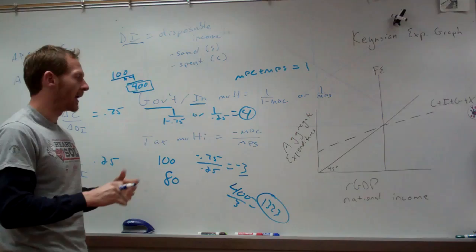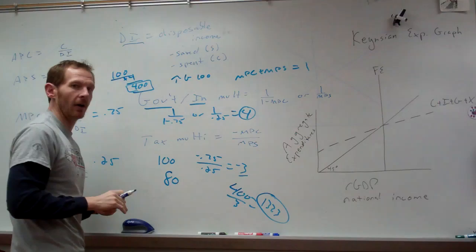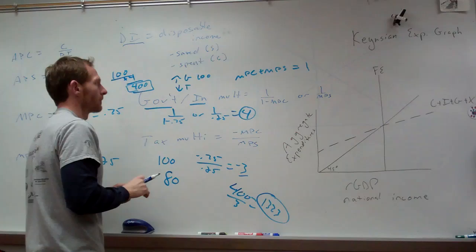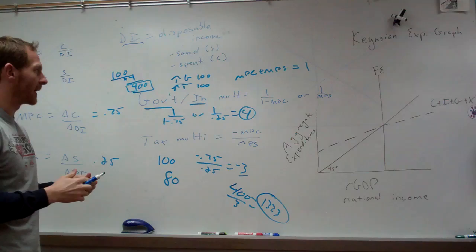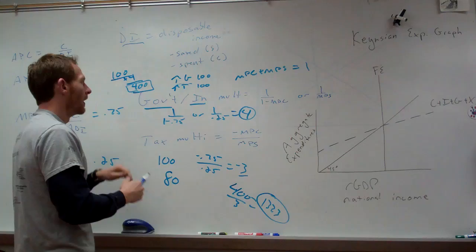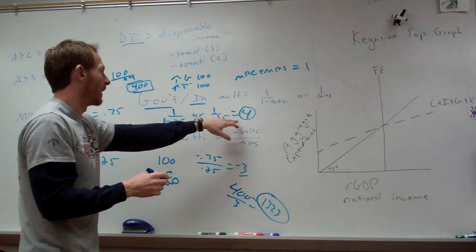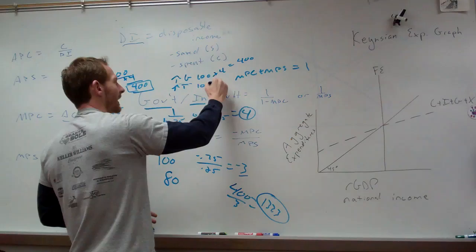There's also a balanced budget multiplier. If we increase government spending by $100 and increase taxes by $100, we still have an increase in GDP. If our government multiplier is 4, that gives us $400. The tax multiplier is 3, giving us $300. So our GDP has actually gone up by $100 even with a balanced budget, because the government multiplier exceeds the tax multiplier by one.